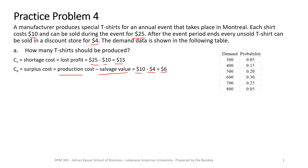The service level is equal to 71.4%. Unlike the case when demand has a normal distribution — where we find Z and plug it into Q = μ + Zσ — here we have a discrete probability distribution and SL = 0.714. Remember, SL is the probability that demand is less than or equal to Q, so we need to compare it with the cumulative probability of demand being less than or equal to each discrete value. That's why we add a cumulative probability column.